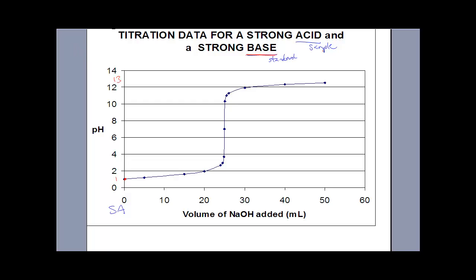So it starts off at 1 and ends at 13. This almost vertical section, at the halfway point — if you go over — you're going to get 7.0. That should make a lot of sense to you. At the halfway point on this curve is when you have the strong acid concentration equaling the strong base concentration. When an acid equals a base, it gives you something that's neutral. So halfway through the pH curve you get your neutral solution. This is the stoichiometric point of your titration — it can be called the end point. This is what you all did on Monday. That solution turned pink right there.